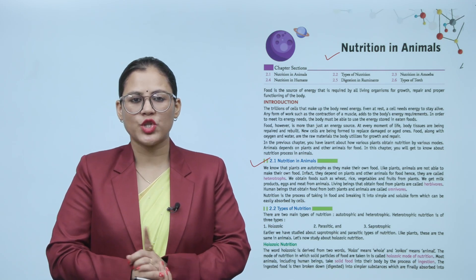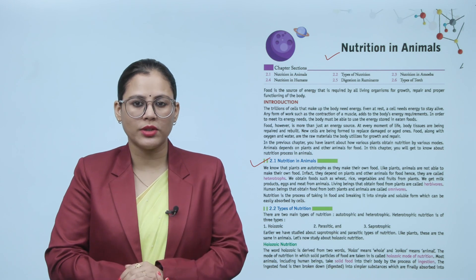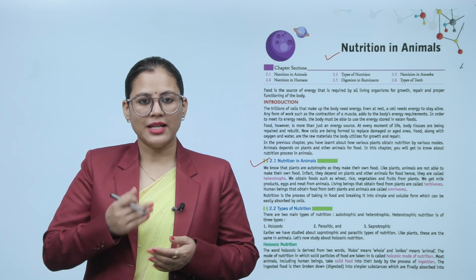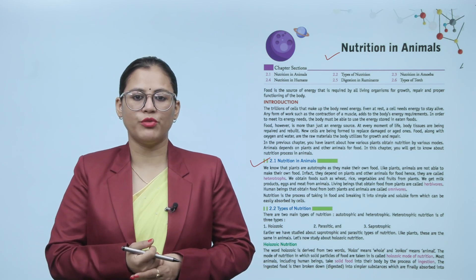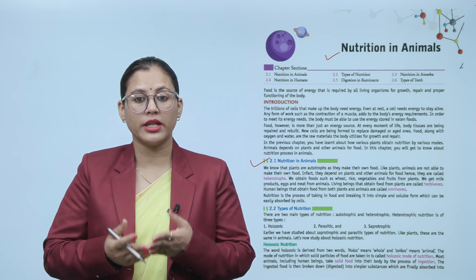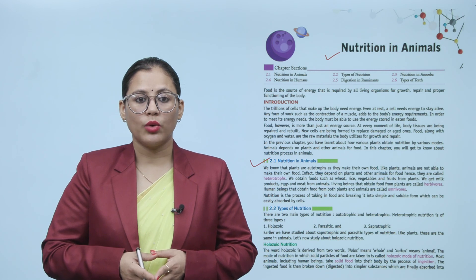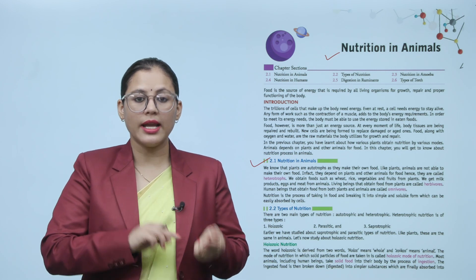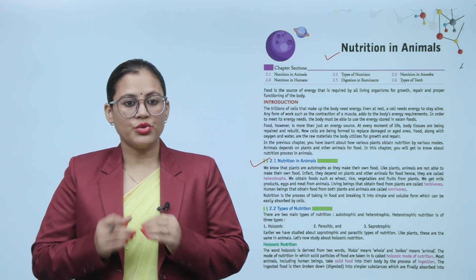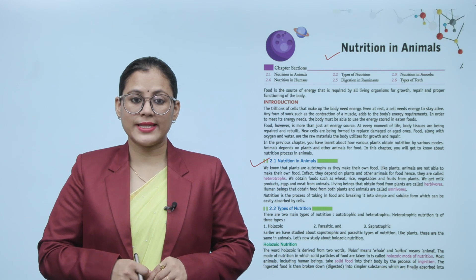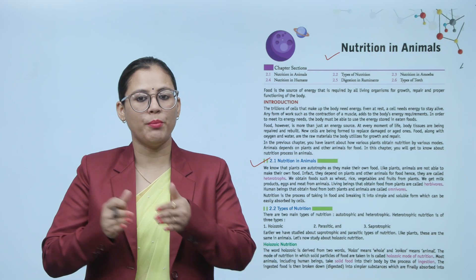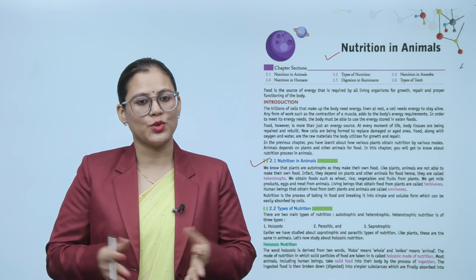As you know from the previous chapter, plants are autotrophs while animals are heterotrophs — because they cannot make their own food. Living beings who obtain their food from plants are herbivores, and human beings who obtain food from both plants and animals are omnivores. Nutrition is the process of taking in food and breaking it down so that the cells can easily absorb it.